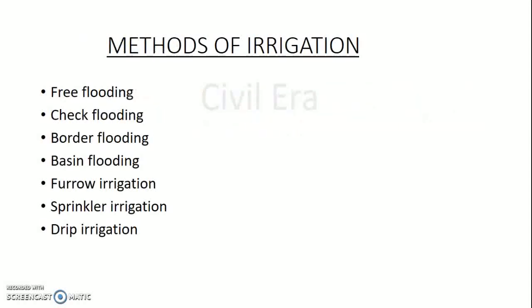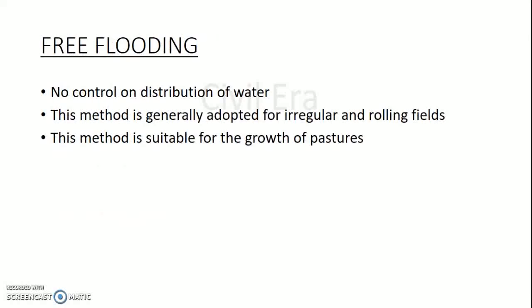Moving on to the next topic: methods of irrigation. There are some methods — free flooding, check flooding, border flooding, basin flooding, furrow irrigation, sprinkler irrigation, and drip irrigation. Our first method is free flooding, also known as wild flooding. As there is no control on distribution of water, this method is generally adopted for irregular and rolling fields. This method is suitable for the growth of pastures.